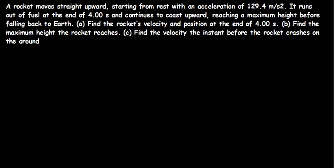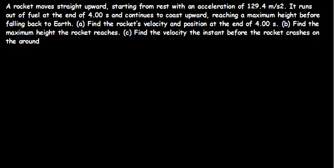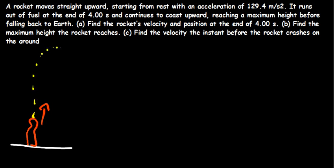It's important to come up with a free-body diagram of what is happening here. Here is the rocket, and this is the ground. The rocket is going upward. I've been told that the acceleration is 129.4 going up — it will go from here all the way to the top, then come back down. From the launch point all the way up to where the fuel runs out, I'll call that phase one.